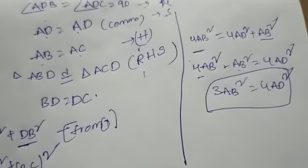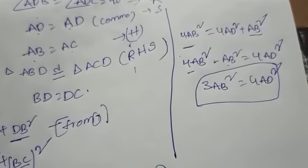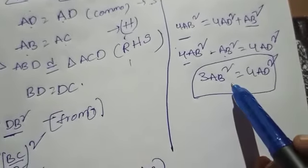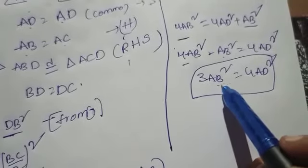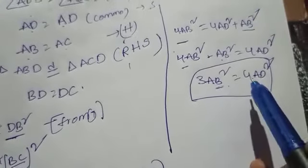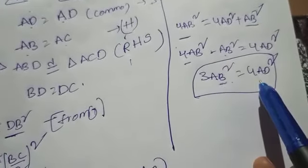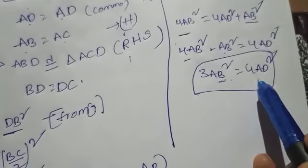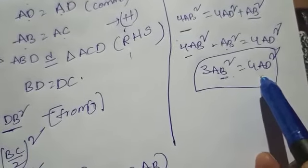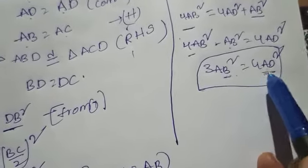Hence, 3 times the square of one side is equal to 4 times the square of one of its altitudes.